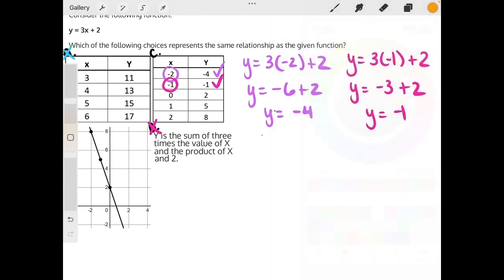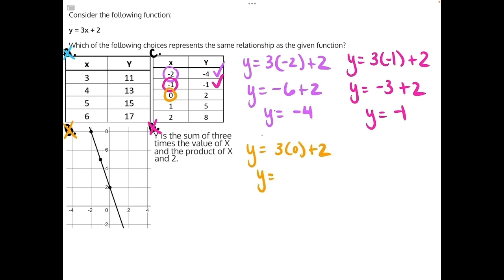So we'll switch colors again, and plug in 0. y is equal to 3 times 0, plus 2. Anything times 0 is just 0, so we'll have 0 plus 2, which will give us 2.